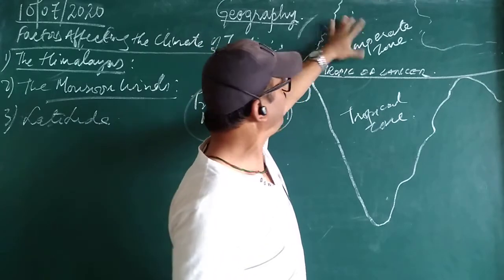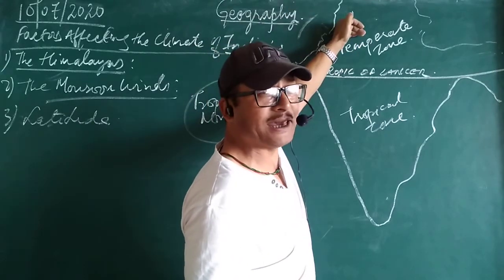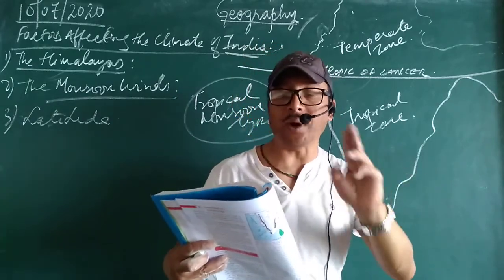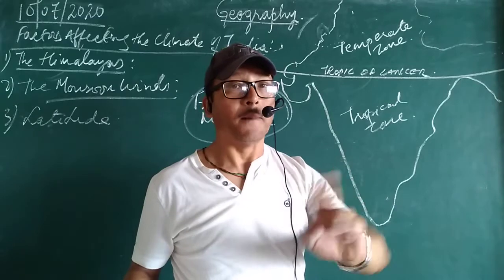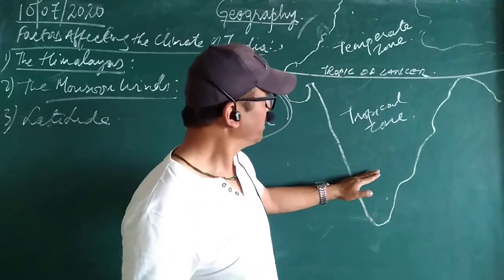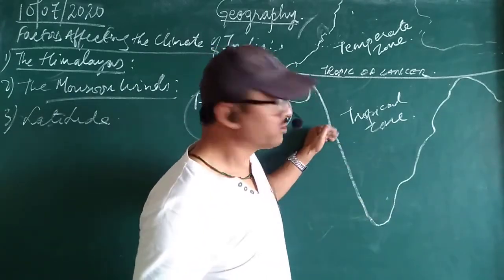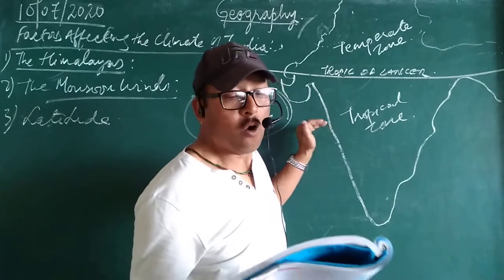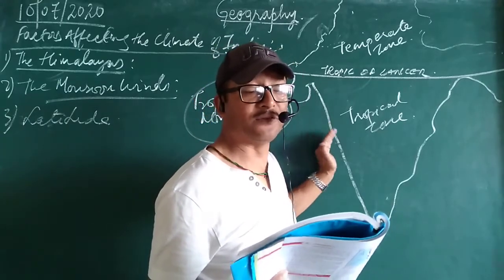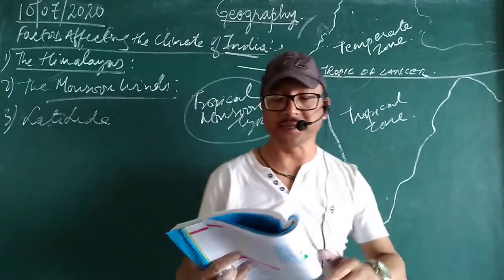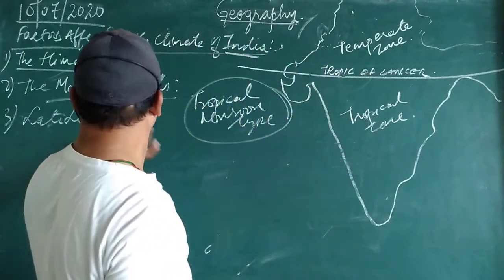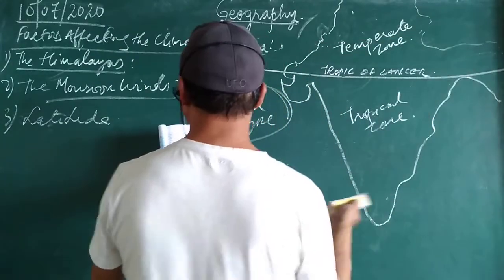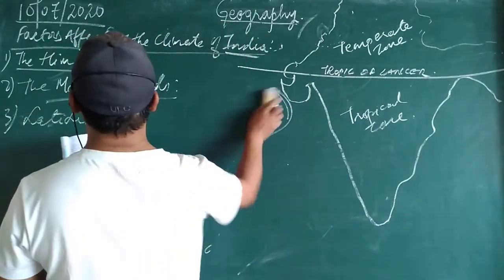In the northern temperate zone, the rays of the sun do not fall directly vertically at any part of the year. Whereas the southern tropical zone has the midday sun almost vertically overhead twice every year — around June and September, the rays of the sun will be overhead in this area. This is about latitude and how it affects the climate of India.